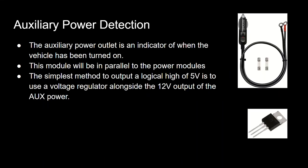Auxiliary power detection: the auxiliary power outlet is an indicator of when the vehicle has been turned on. This module will be in parallel to the power modules. The simplest method to output a logic high of 5V is to use a voltage regulator alongside the 12V output of the auxiliary power.